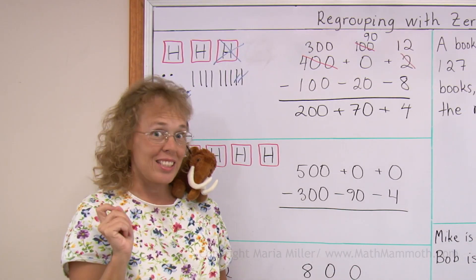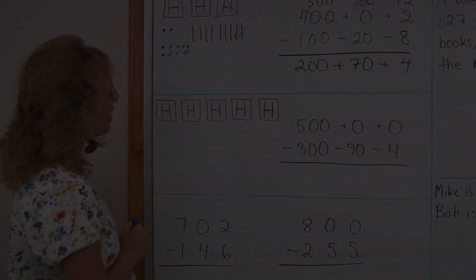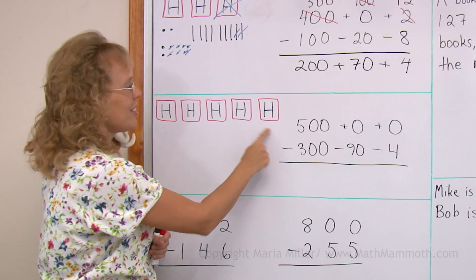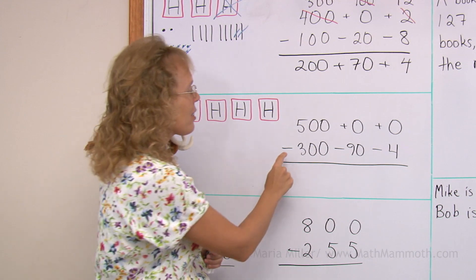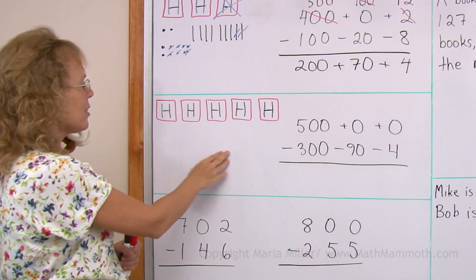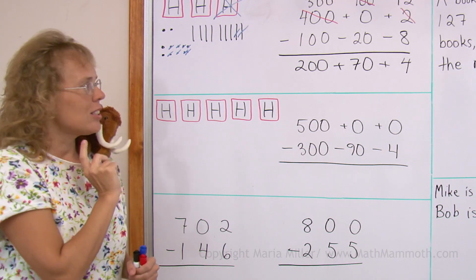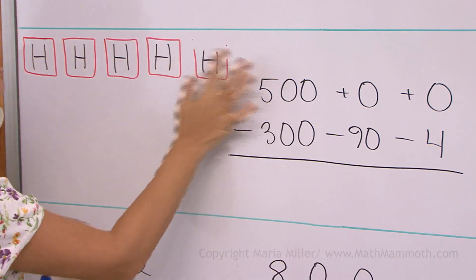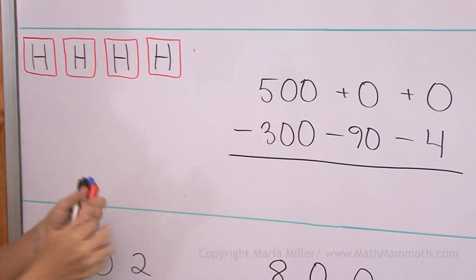But let's do all of this again with this next problem. This time I have 500. I need to subtract 394. There are no tens, no ones. So I will take 100 and break it into 10 tens.